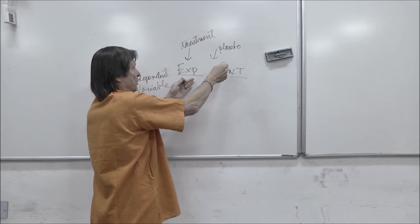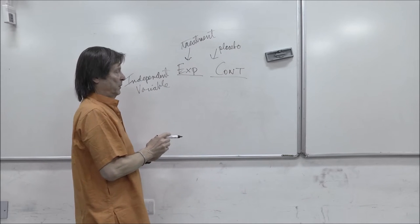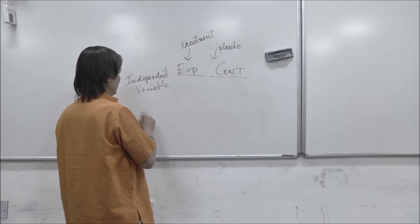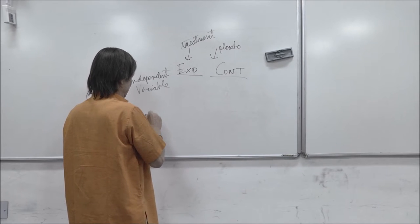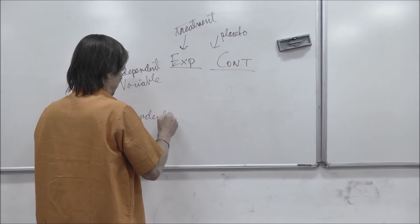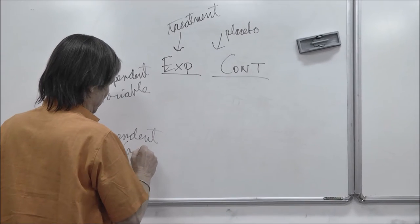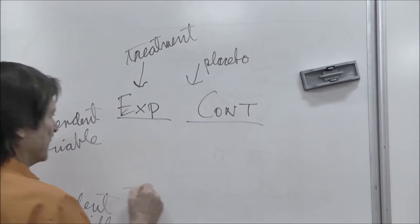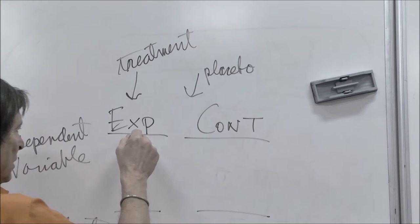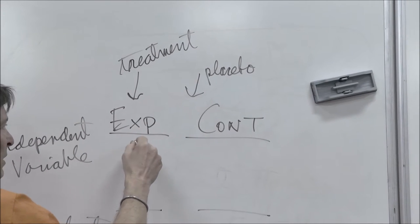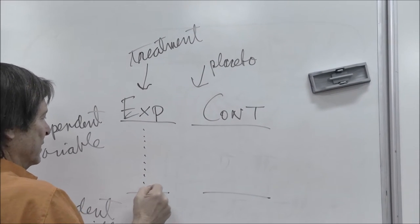The placebo is going to control for treating this group special, and then we're going to measure them to see if it works by dependent variable, or sometimes called the response variable. And so this treatment will turn into some numbers, some group of numbers.